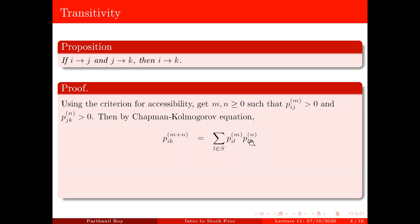Now this is of course bigger than or equal to pijm times pjkn, because this guy is one of the summands here. Everything is non-negative, so therefore this is bigger than or equal to this. Now by the choice of m and n, both of these are strictly positive. So therefore, this product is also going to be strictly positive, which will show that this pikm plus n is strictly positive. And m plus n, again, is a non-negative integer.